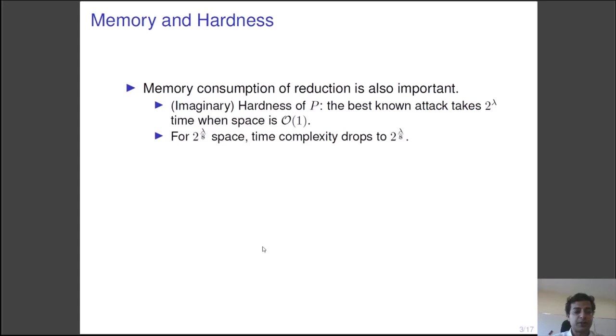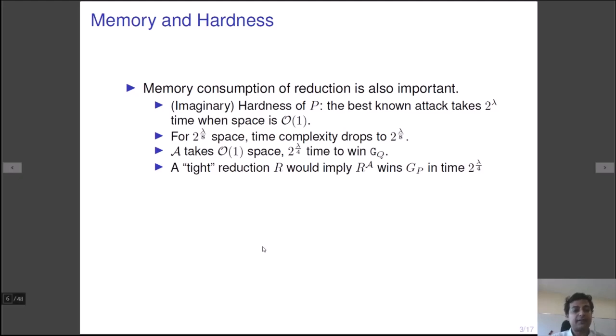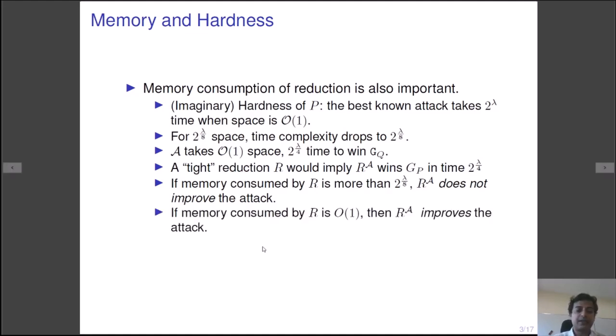Now consider the function F from P and the construction CF. Suppose the adversary A breaks CF in the game GQ in taking constant space and 2 to the power lambda by 4 time. A tight reduction would imply that the reduction R would win the game GP against F in time 2 to the power lambda by 4 as well. As we can see, if the reduction R takes more than 2 to the power lambda by 8 space, then the reduction is meaningless. On the other hand, if the reduction takes same time as A, then the reduction breaks the security conjecture of P.